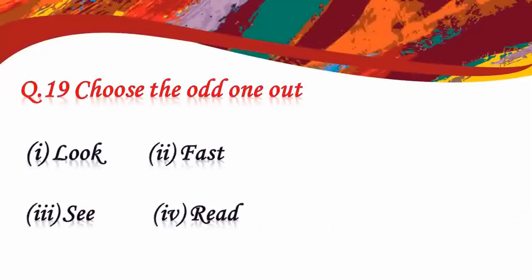Question number 19: choose the odd one out. Option 1: look. Option 2: fast. Option 3: see. Option 4: read. Here, look, see, and read all relate to vision or seeing and have similar meanings. Option 2, fast, is different. So the odd one is fast, and option 2 is correct.